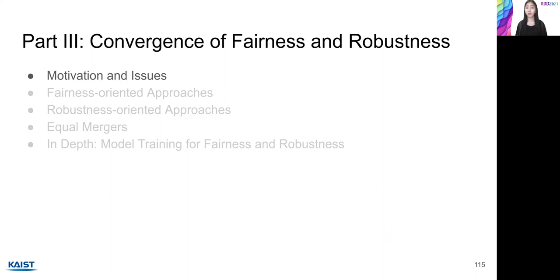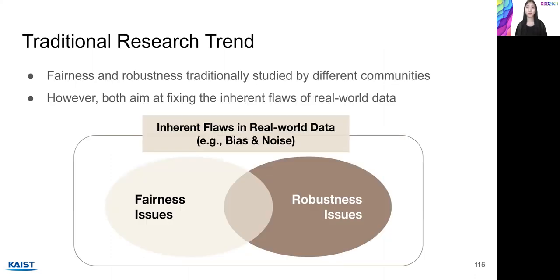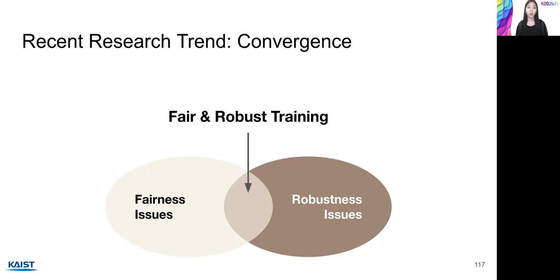Traditionally, robust training and fair training have been studied by separate communities for different applications. However, these two research directions share the common purpose of fixing the inherent flaws in the data. For example, fair training aims to mitigate bias and discrimination in the data, and robust training tries to compensate for noise and poisoning due to attacks in the data. What we have to focus on here is that such bias and noise issues are not completely separable, and can even affect each other. So a new research trend has emerged where fairness and robustness techniques are integrated into the same framework.